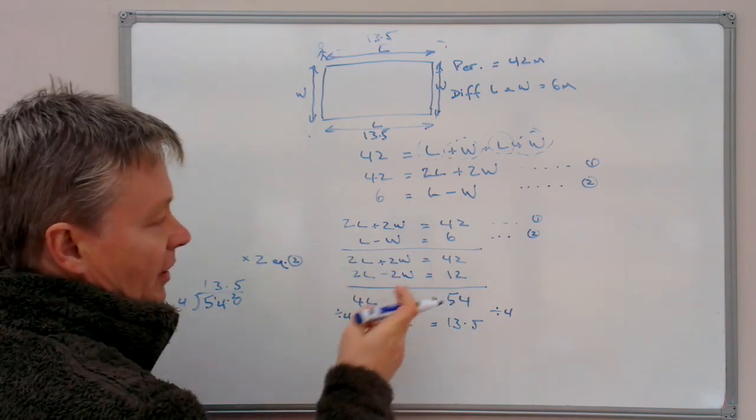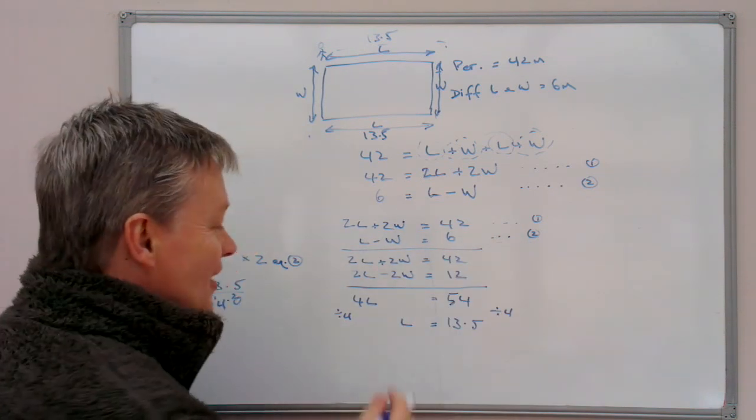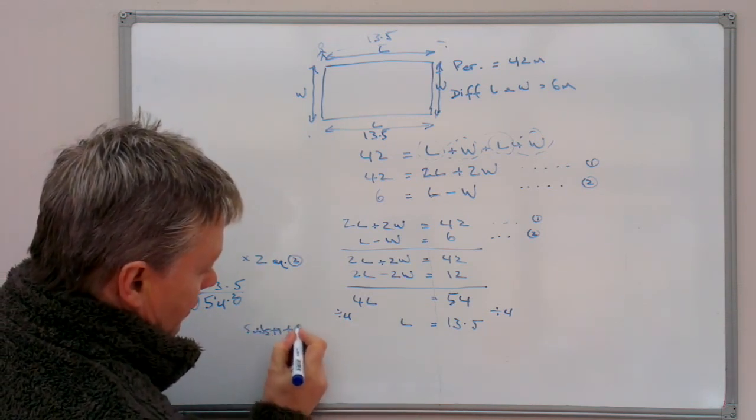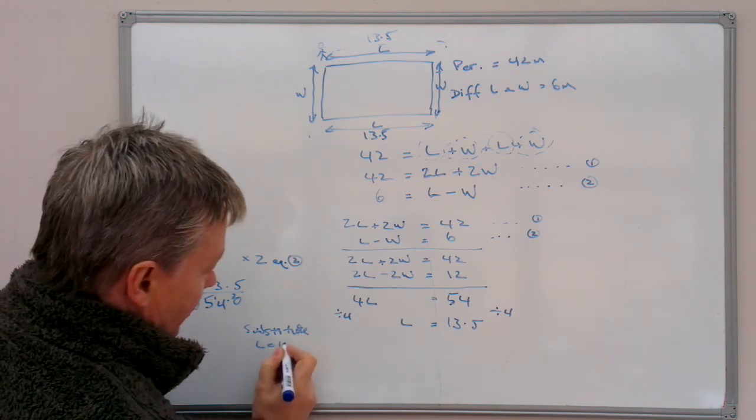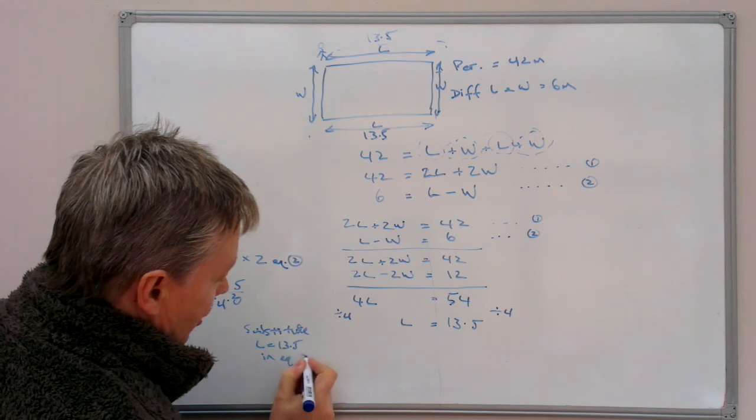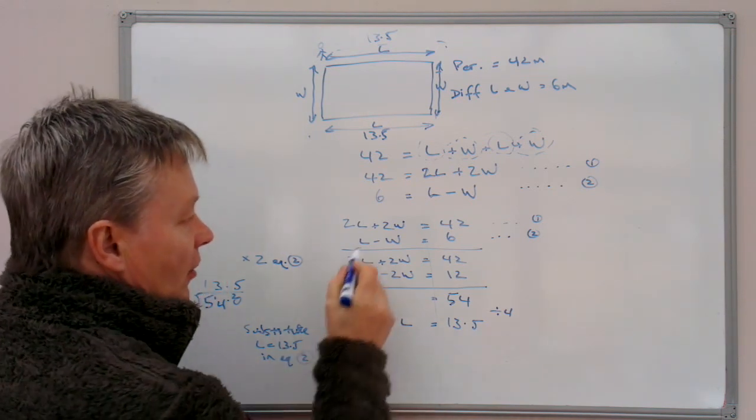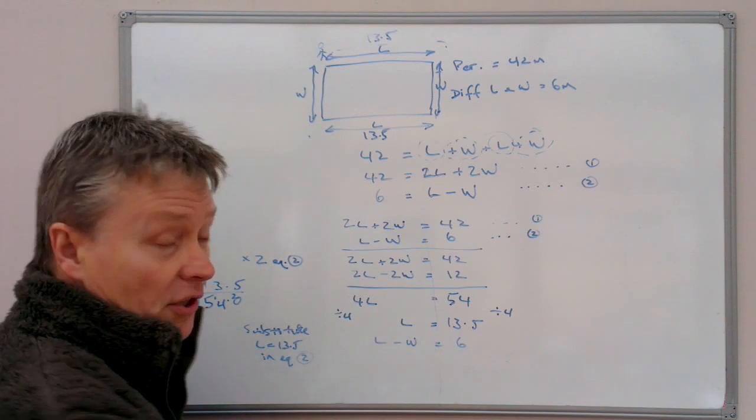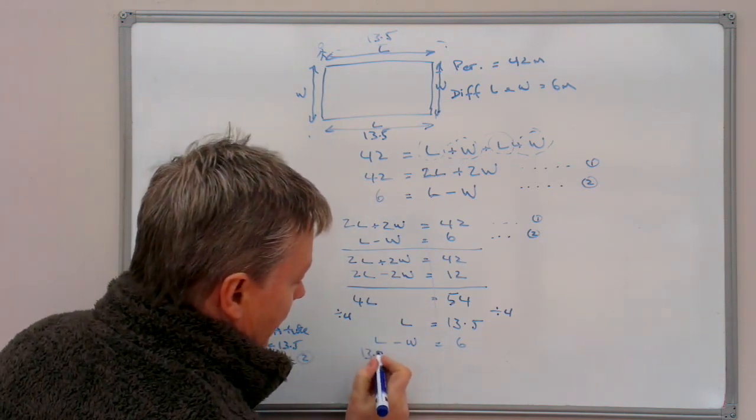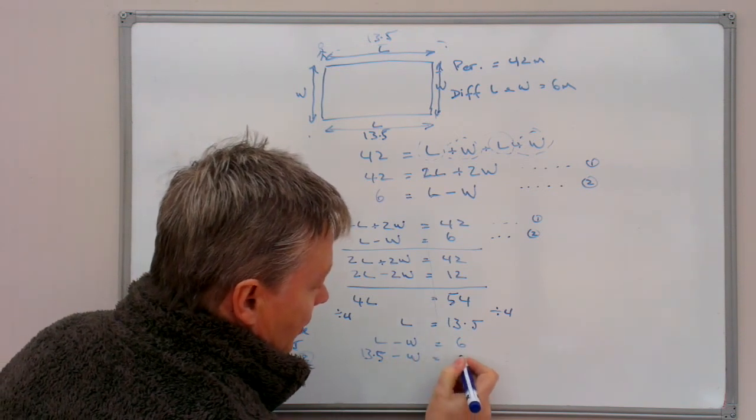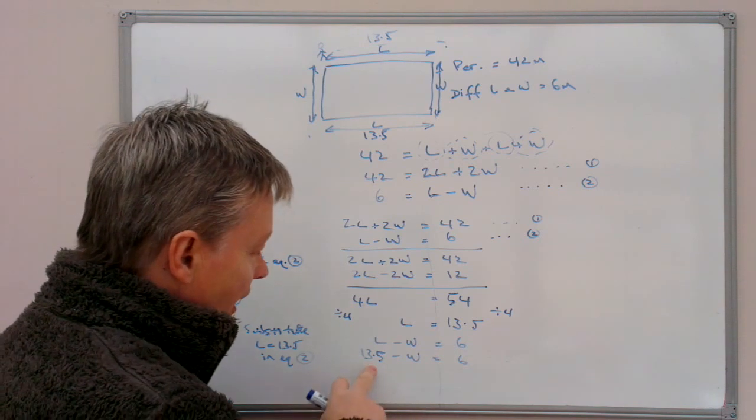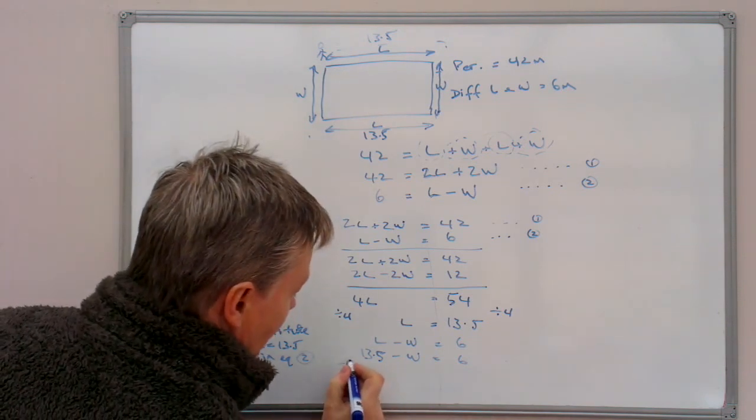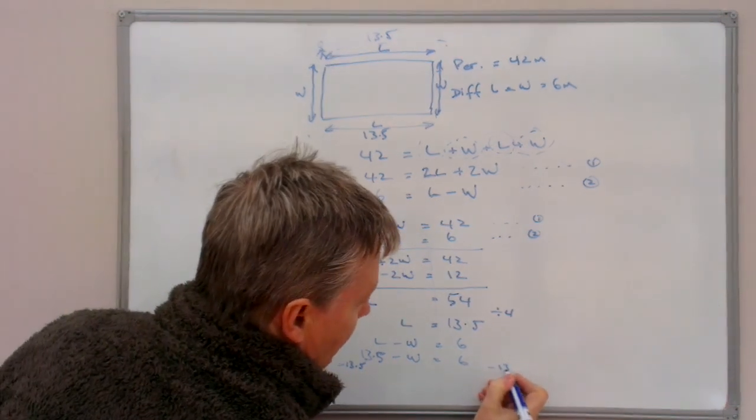So if I put it into equation 2, it's probably a little bit easier. So I'm just going to put a note here for the examiner that I'm going to substitute L equals 13.5 in equation 2. So the equation 2 is L minus W equals 6. So I'm going to substitute it in. L is 13.5 minus W equals 6. So what I'm going to do then is take 13.5 from both sides. So if I take 13.5 from both sides, minus 13.5 there.